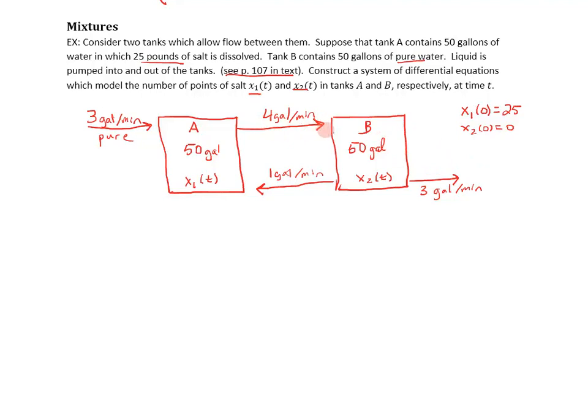And so if you notice, each tank has a total of four gallons per minute moving in and out of it. So for example, tank A has this three gallons per minute coming in and one gallon per minute coming in from tank B, and together that's four gallons per minute coming in. And tank A has only four gallons leaving going to tank B. Now tank B on the other hand has four gallons coming in from tank A, one leaving to go to tank A, and three leaving to leave the system. So together four gallons per minute leaving, which means our volumes are going to stay fixed.